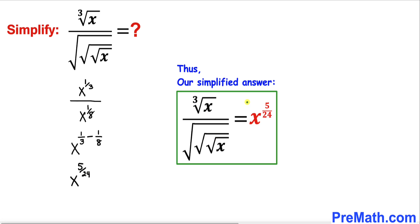Thus our simplified answer to this given radical problem is x to the power of 5 divided by 24. Thanks for watching and please don't forget to subscribe to my channel for more exciting videos.